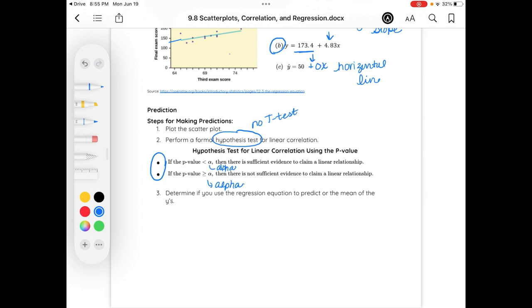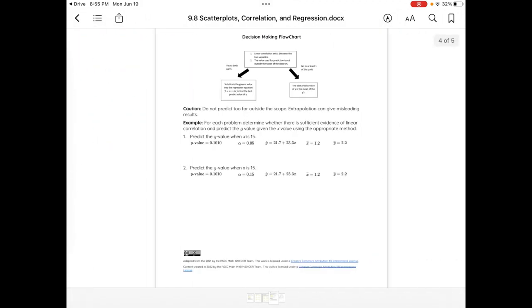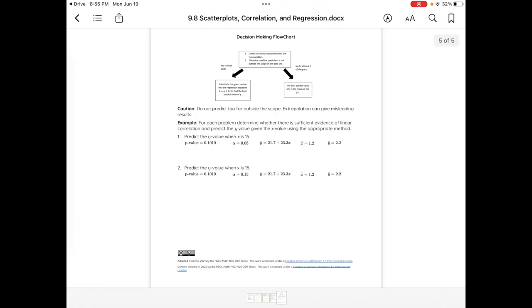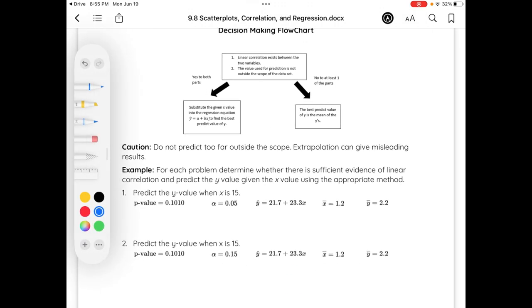Determine if you use the regression equation to predict the mean of the y's on the next page. So, here's our flow chart that will be definitely helpful for us. So, the linear correlation exists between the two values. The value used for the prediction is not outside of the scope of the data. So, be careful to not predict too far outside of the scope. Extrapolation is still alive and well and can give us misleading results.